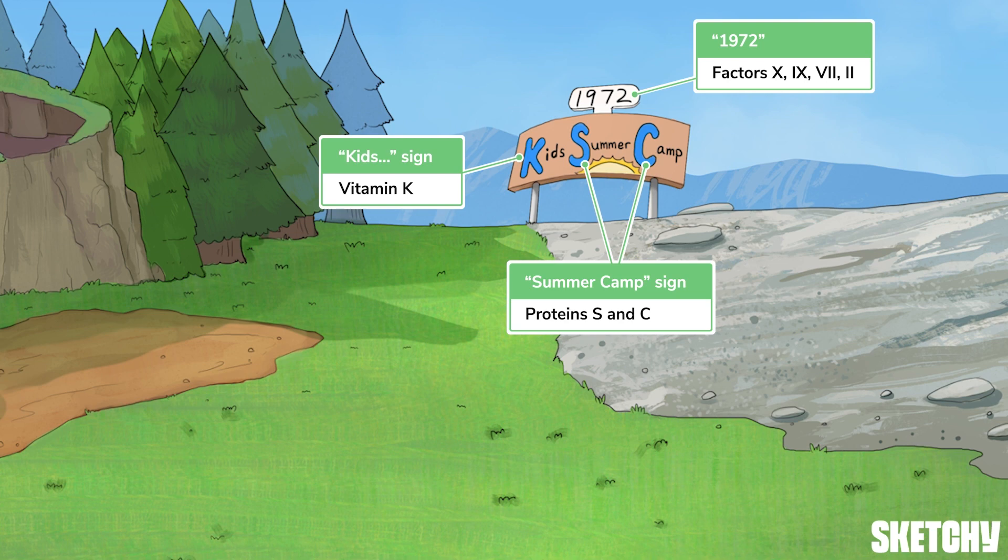To help you remember this, we've blasted back to the year 1972 and marked out Sketchy summer camp with this kids summer camp sign, with emphasis on the K, S, and C.